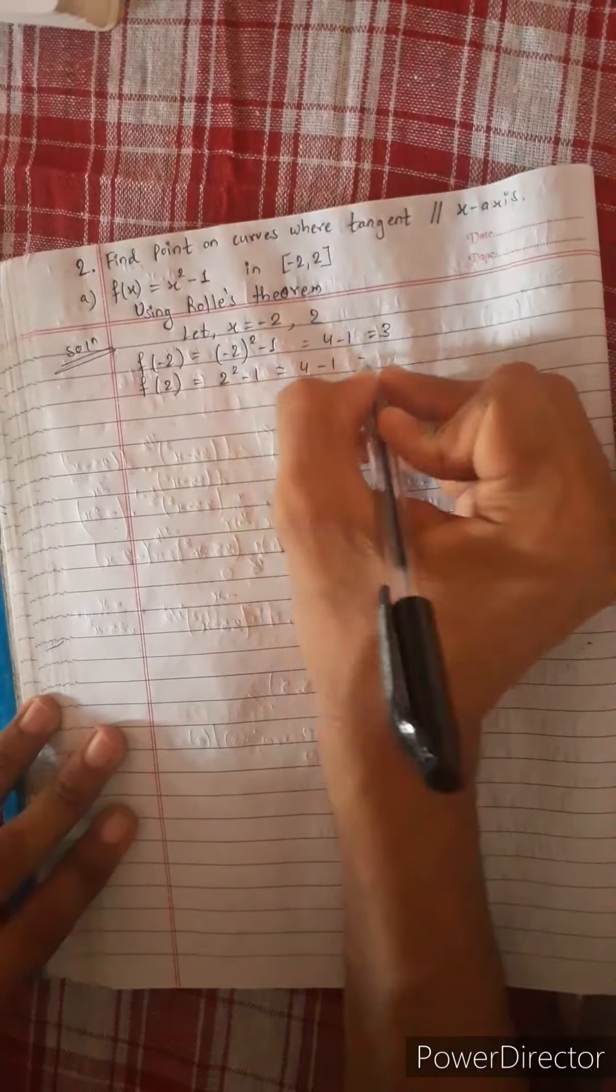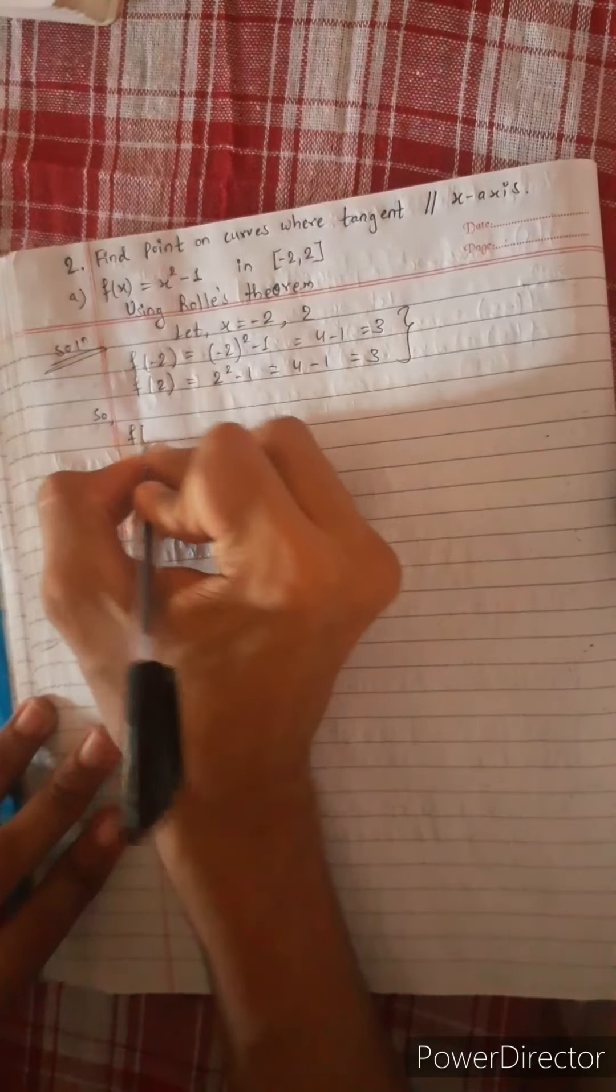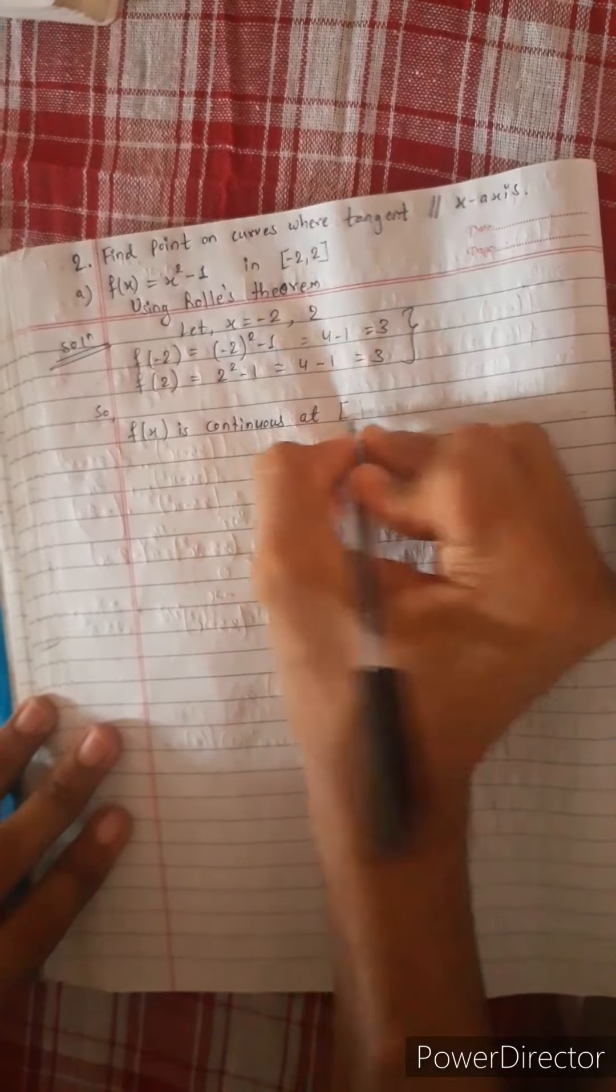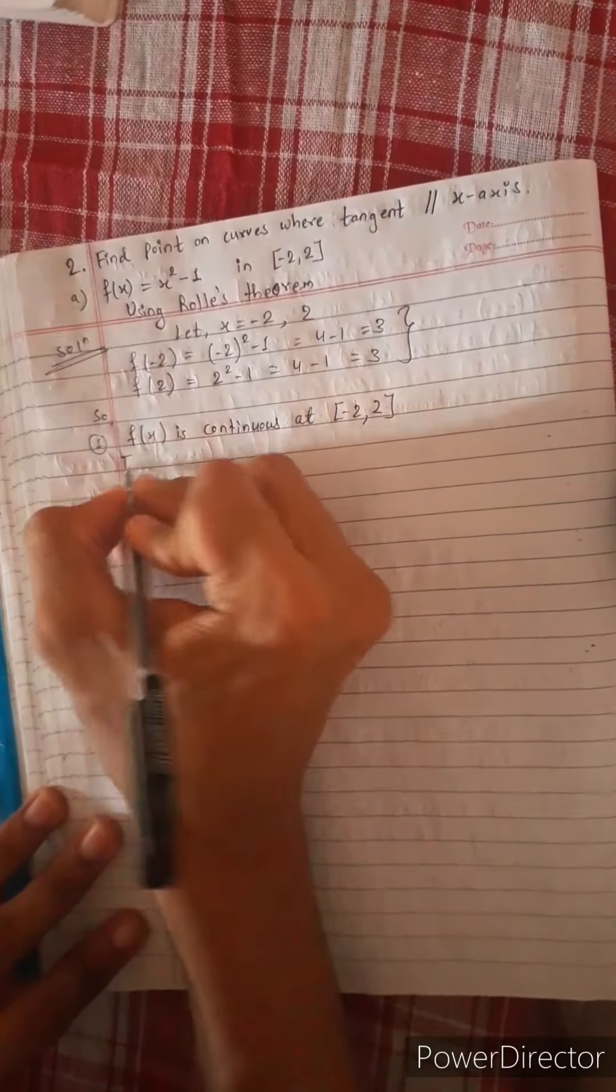F of x is continuous at the closed interval minus 2 to 2. Then the condition is equal to minus 1.